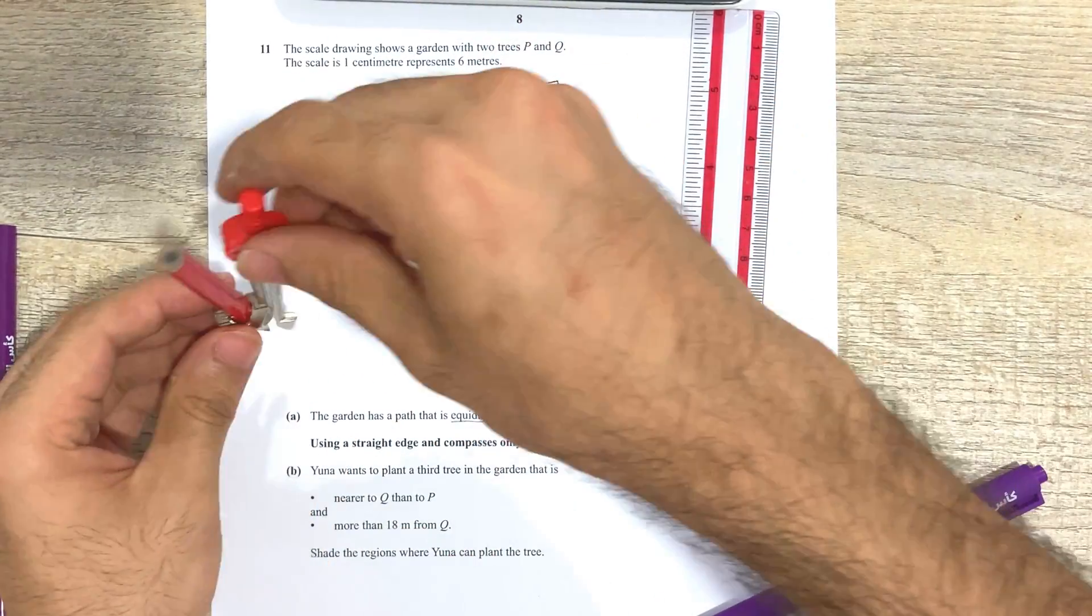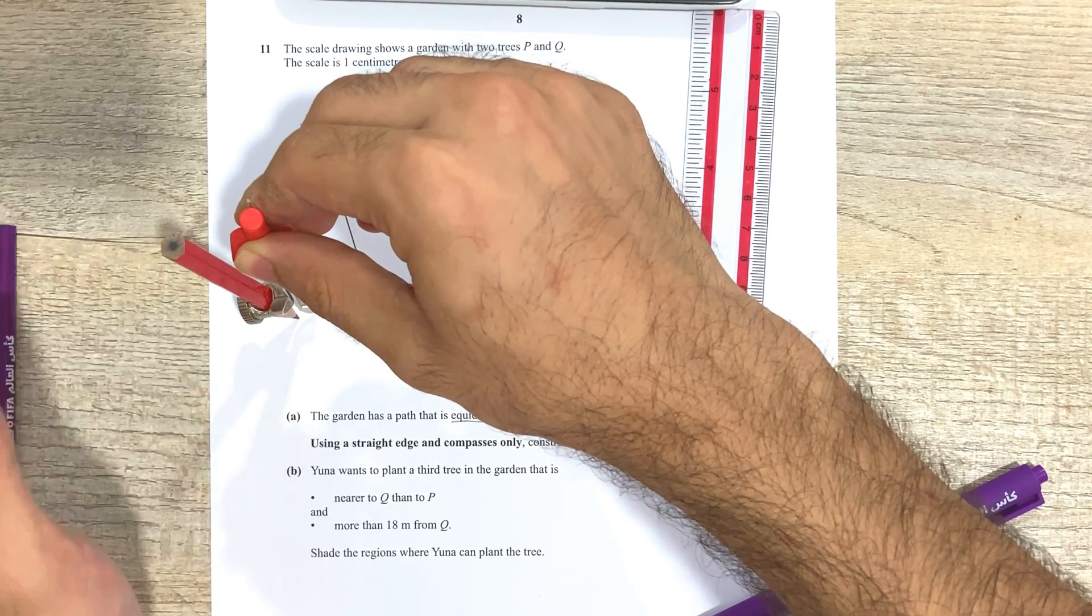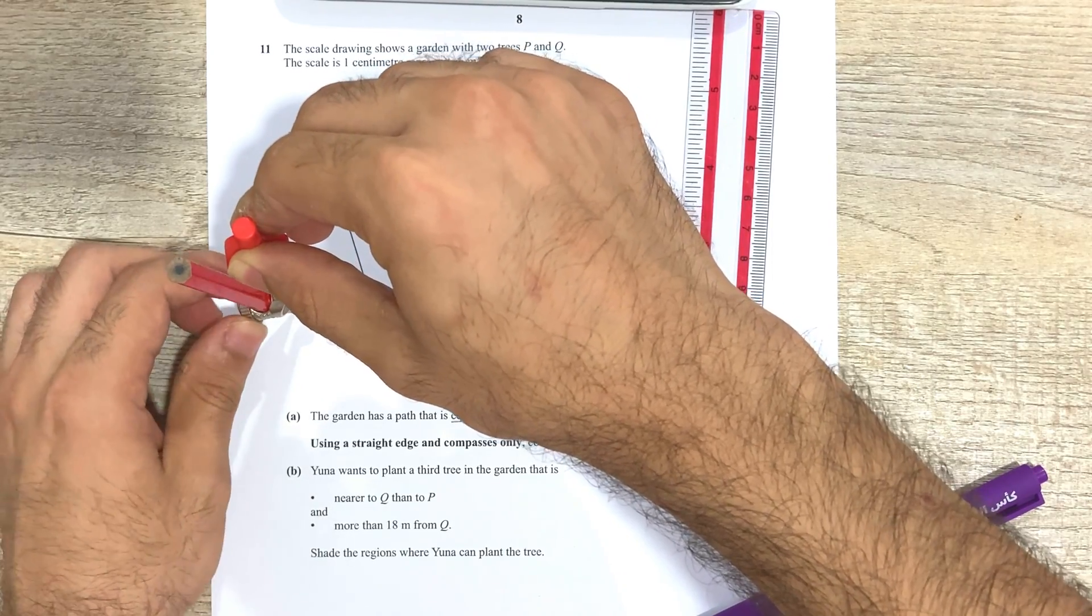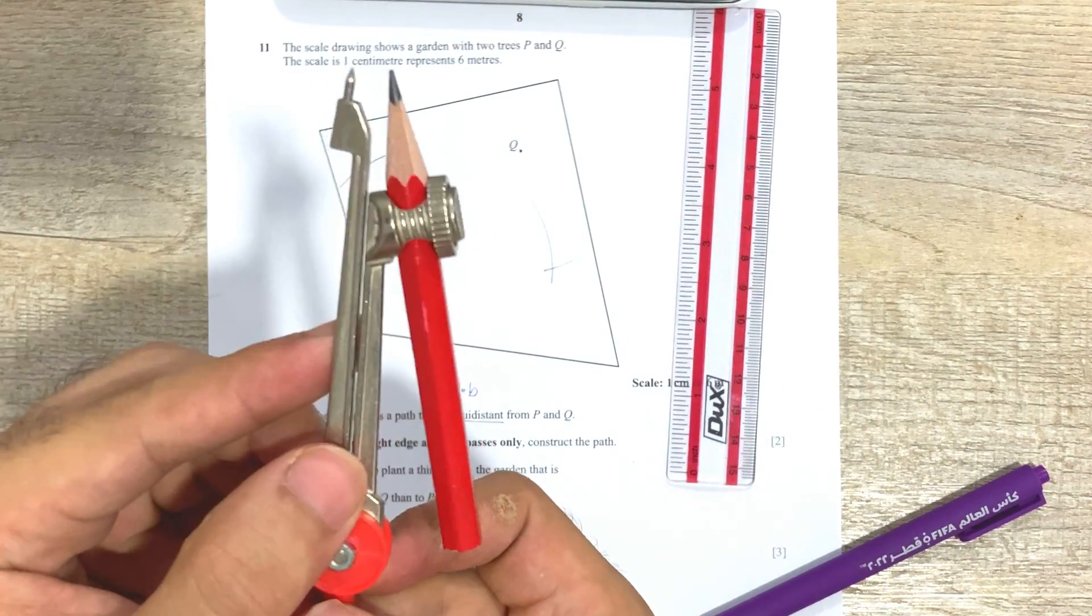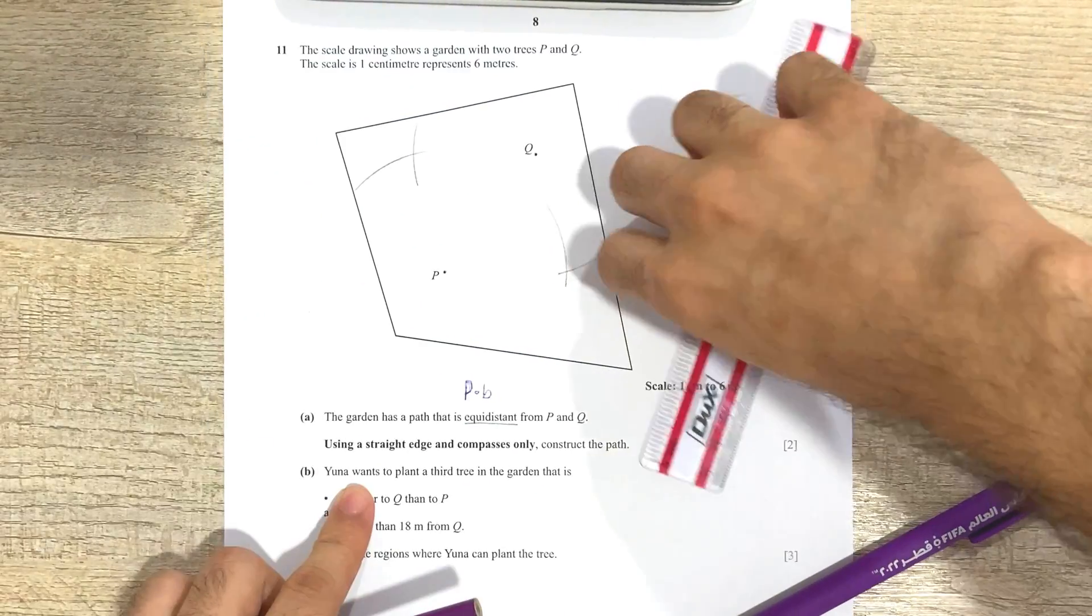By the way, a quick tip is that whenever you're setting up your compass, make sure that your pointed side and the pencil they're both aligned. So the way to do that is to just let your pencil free and let it touch the desk or whatever it is, and then tighten it so that way you can see that both of them are at the same level.